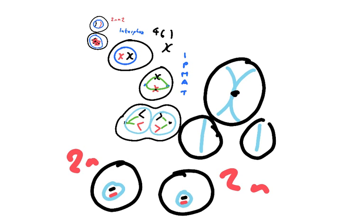Semi-conservative replication in interphase produces replicated chromosomes — each chromosome is a replicated chromatid, so the two chromatids are identical, each containing one old strand and one new strand copied by DNA polymerase. These then line up in metaphase, get pulled apart in anaphase, and form two separate cells. This is how organisms grow — by producing more cells through mitosis.